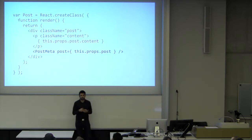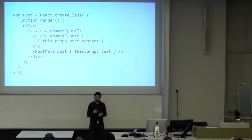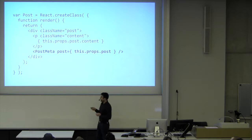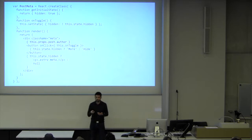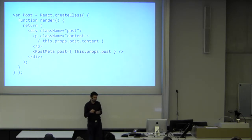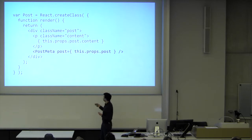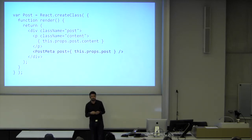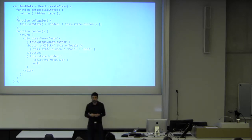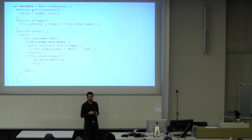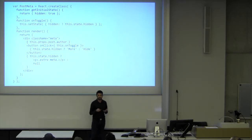We can nest components inside one another. If we want to use a PostMeta component, it isn't anything special — it's just another JavaScript variable. All of the properties we pass to it, in this case 'post', look like a typical HTML attribute, and we can access them in the child component via this.props.post. This is how components get their data.